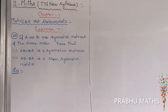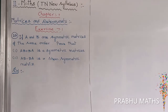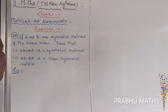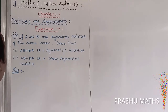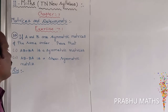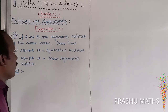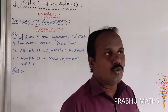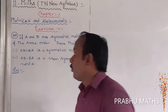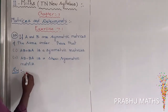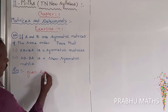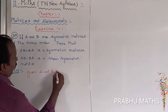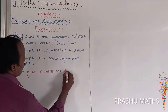Question 7.1. If A and B are symmetric matrices of the same order, prove that: the first subdivision, AB plus BA is a symmetric matrix; the second subdivision, AB minus BA is a skew-symmetric matrix. The given information is that A and B are symmetric matrices.